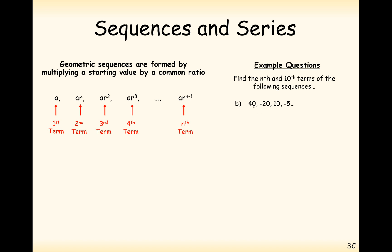We can have common ratios that are negative numbers as well. This ratio looks like it's going to be negative a half. Let's check the second term: when we times a negative number by negative a half, we get a positive 10. So that works — the common ratio here is minus a half.